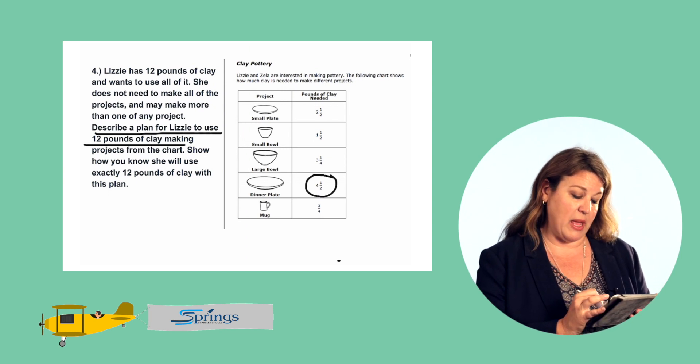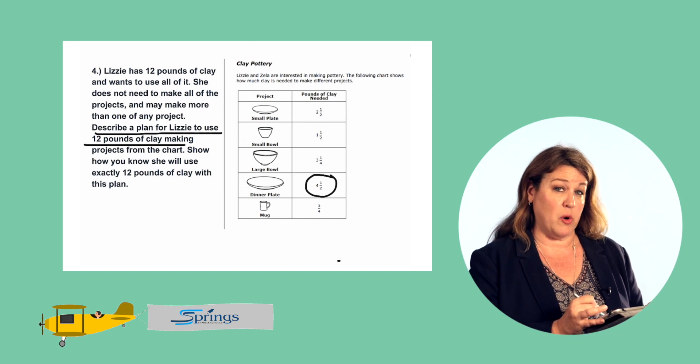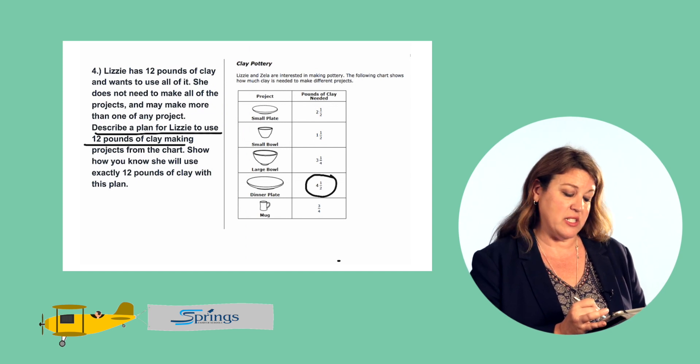So if she were to make three dinner plates, four plus four plus four, it's 12 plus those halves, that's too much.